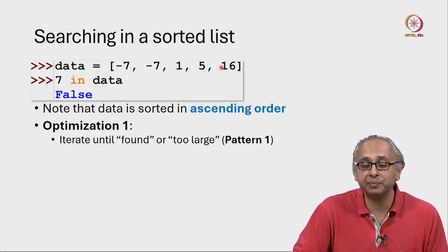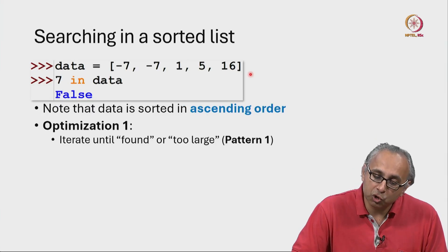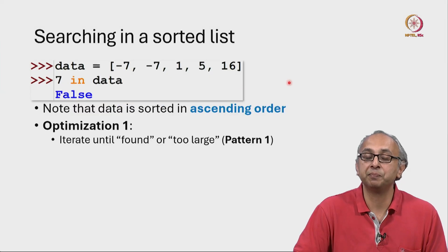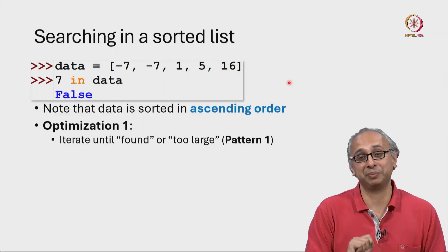As soon as we found an item that was larger than what we were looking for, there is no point searching further to its right. So we could stop the linear search earlier, at least in some cases.